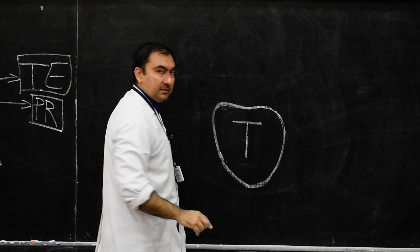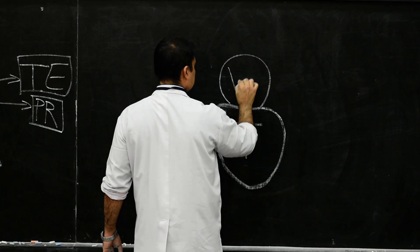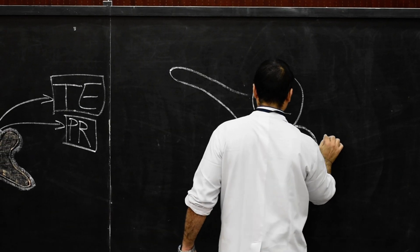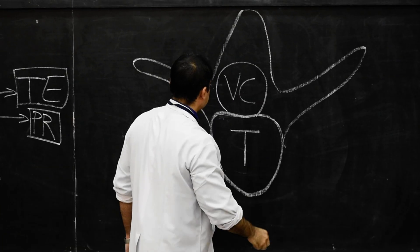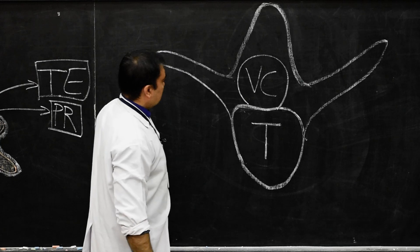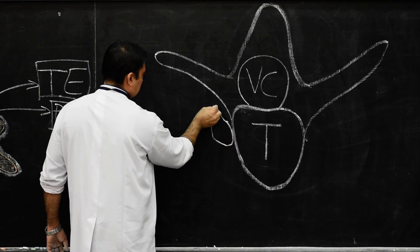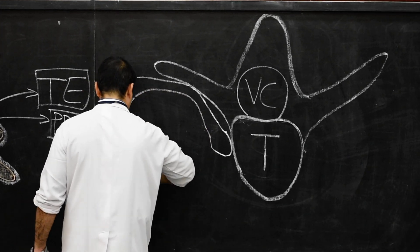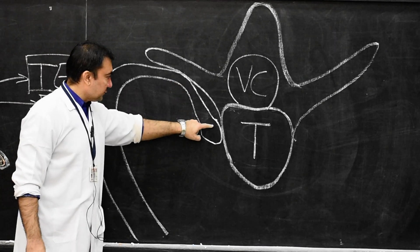This is the thoracic vertebra. We show the vertebral canal, the transverse process on both sides, and the spinous process. We also draw the ribs — the costo-vertebral joint and the costo-transverse joint. This colored segment represents the ribs, and this is how each rib will develop.